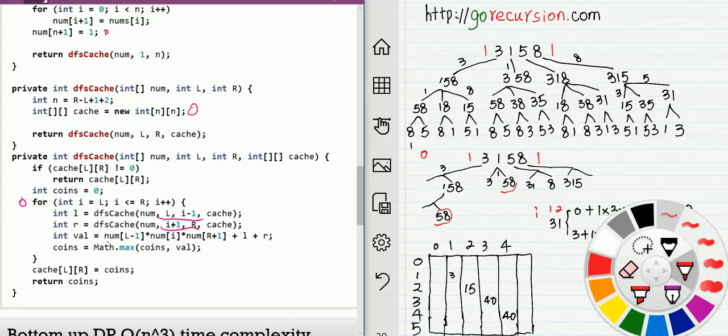The time complexity: after this array is filled, it will take constant time to return. So that's n squared. Each time we have an option, that's n squared times n, which is n cubed.